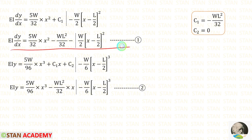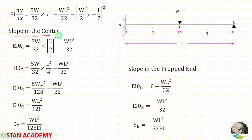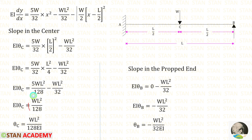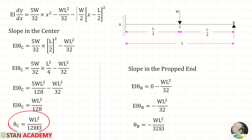Taking equation 1, let us find the slope at the center and at the propped end. For the slope at center C, x equals L/2. We do not consider the Macaulay bracket term since it only applies beyond point C. Substituting x equals L/2: (L/2)² gives L²/4, and 32×4 gives 128. Using the calculator we get the value. Since dy/dx is the slope at C, we denote it theta_C. Finally, theta_C equals WL² upon 128 EI.